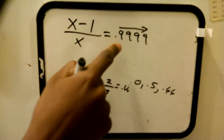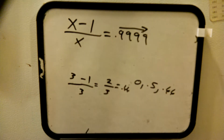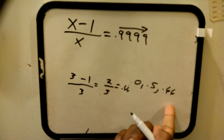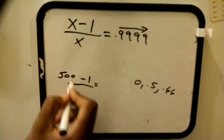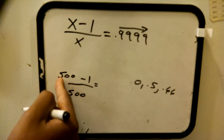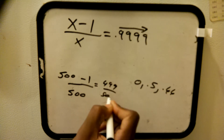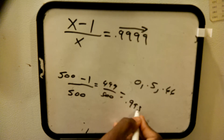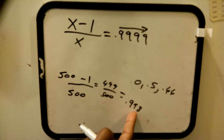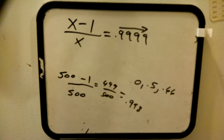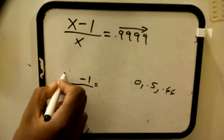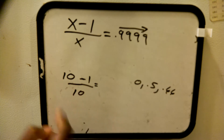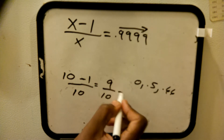Our goal is to get to 0.9999 infinitely, but how do you get there? If you put 500 in, that gives you 499 over 500, which equals 0.998 — there's an 8 at the end, so it's not all 9s. How do you get all 9s? You have to use numbers with a 1. To get something with all 9s, put 10 — you get 9 over 10, which equals 0.9.